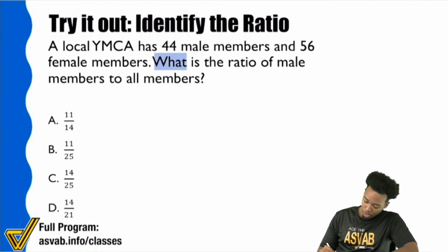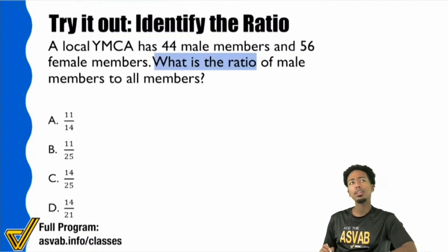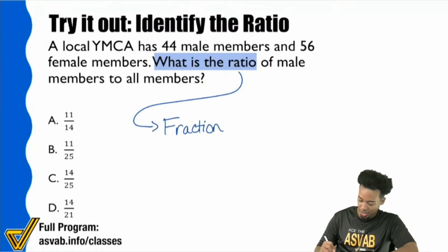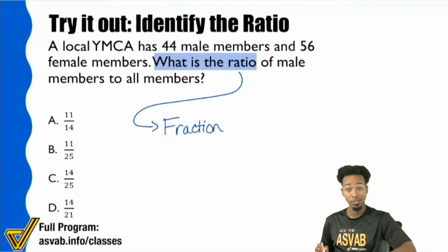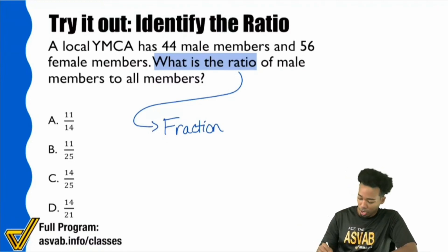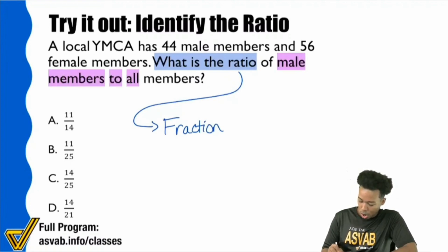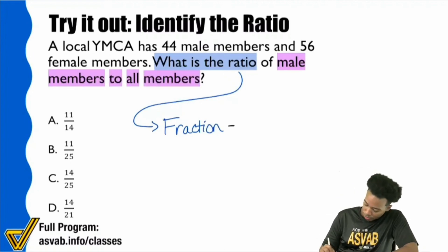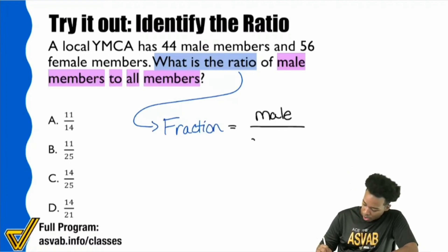It says, what is the ratio? Quick question everybody — what's another word for ratio? Fraction. Let's go and write that down nice and pretty-like. Fraction. Then here it says the ratio, or fraction, of male members to all members. So it looks like we need a fraction that compares the male members to all members.